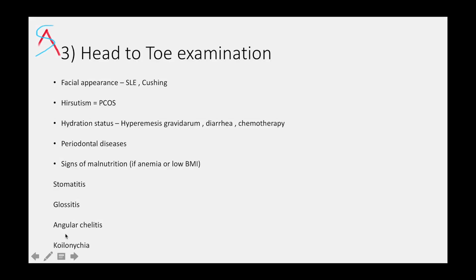In head-to-toe examination, look at the face for any signs of SLE or Cushing's. SLE patients may have a history of recurrent abortions. Look for any hirsutism and hydration status at the tongue. The patient could be dehydrated because of hyperemesis gravidarum, diarrhea, or chemotherapy. Periodontal diseases are linked with preterm labor.